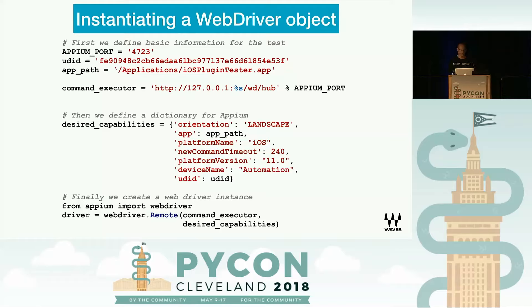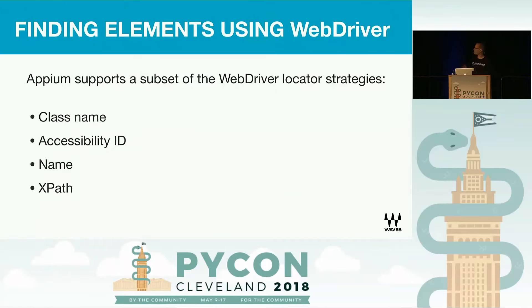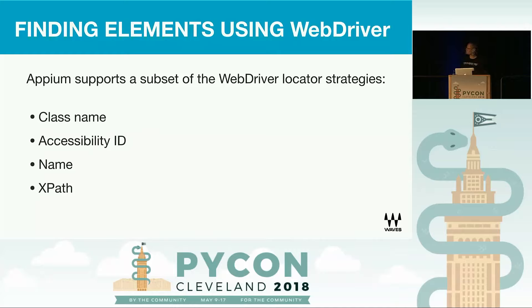Now we have a connection ready and we're ready to start our test. We do that by using GUI elements. Because WebDriver uses basically Selenium, you have the same language as any other test you wrote for web applications. So we have a few strategies — we can locate elements by class name like buttons, dialogs, sliders, etc. We can use the accessibility ID, which is a unique ID for each control in the GUI. Or we can use locators such as name or XPath, which are slower and are not really recommended unless you don't really know what to look for.